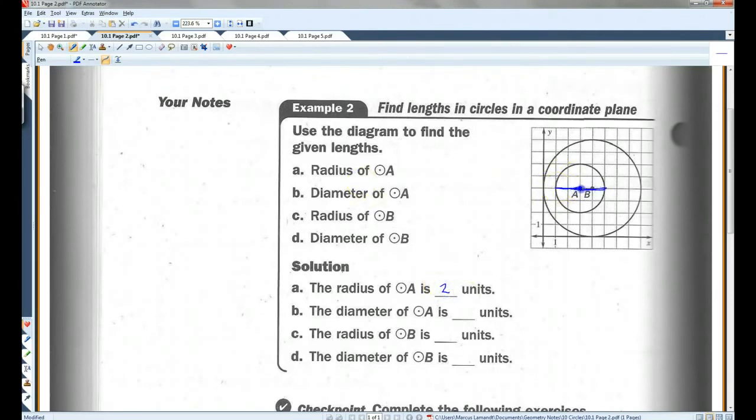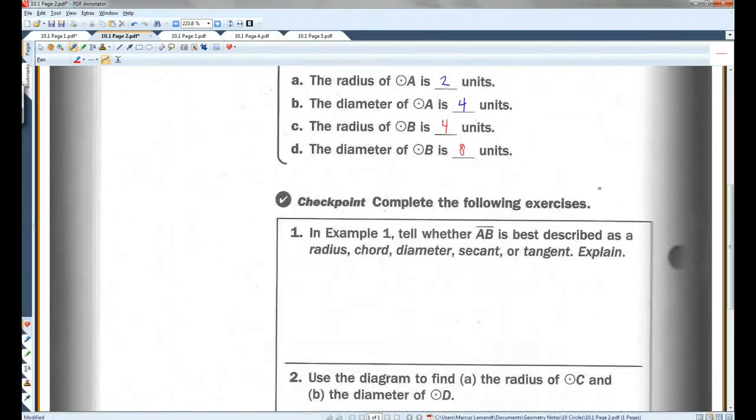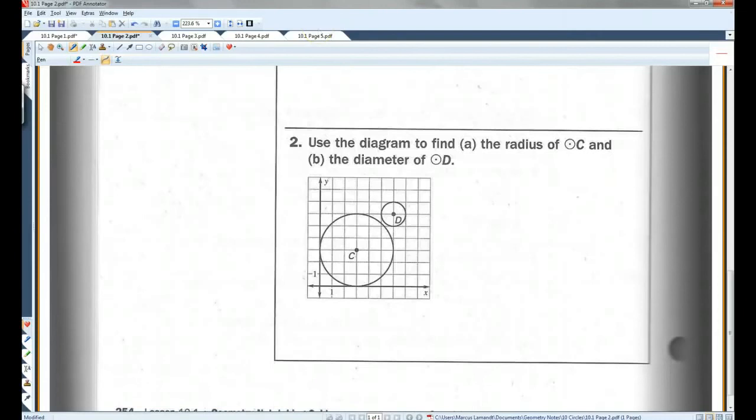The diameter of circle A. We'll just continue this all the way. Looks like, one, two, three, four units. Another way you could do it is just double the radius. The diameter will always be double the radius. The radius of B. Let's change colors. I'll use red. From the center to the edge. One, two, three, four. Which means the diameter would have to be eight, because that's all the way across. I'm going to let you guys do the checkpoint on your own. Let's go on to page three.